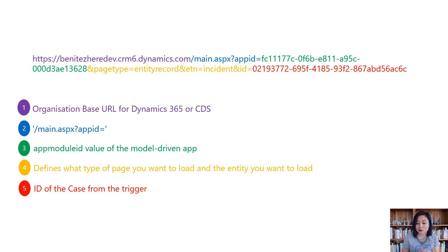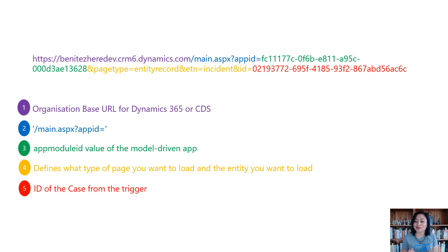In my scenario, it's the customer service app we want to direct the end user to. Number four defines what you want to load — the page type — where it is of entity record. The entity name for that entity record in my scenario is incident, which represents a case in Dynamics 365 or CDS. And then number five is the ID of that record — in my example, it is the case that triggered this flow. So that's what the record URL is made up of, and the first thing we need to do is identify the organization base URL.